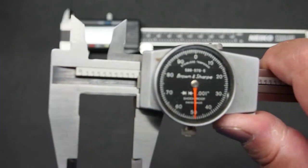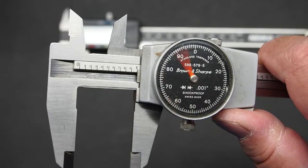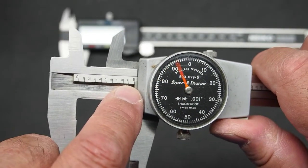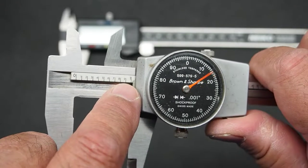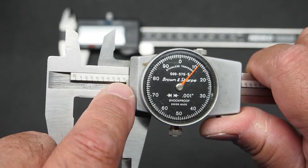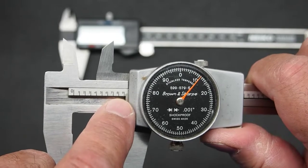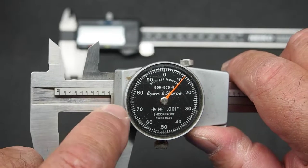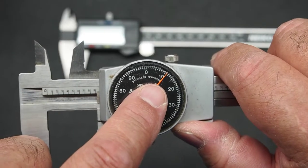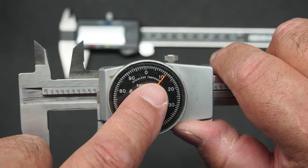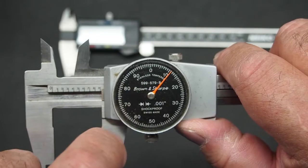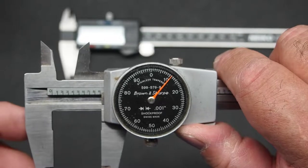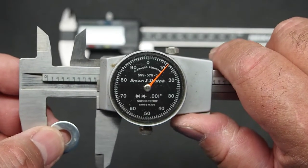The scale here shows you tenths of an inch. So like here I'm just right past one inch. Here I'm a little past nine tenths of an inch. And so where it's sitting right now I would read this as 0.9 and then on the dial here I'm sitting right at the 11 mark so it would be 0.911 or 0.911 of an inch.